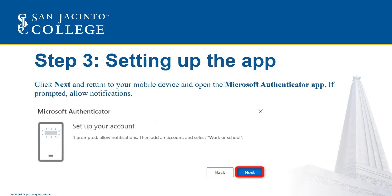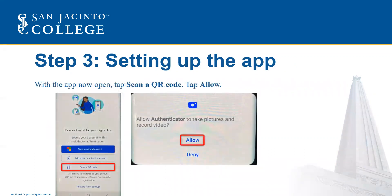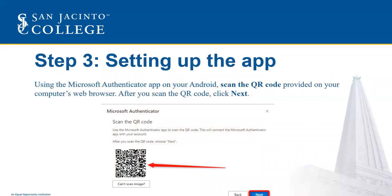If prompted, go ahead and allow notifications. With the app now open, tap Scan a QR Code. If a message comes up asking if you would like to allow Authenticator to take pictures and record video, tap Allow. Using the Microsoft Authenticator app on your Android, scan the QR code provided on your computer's web browser.